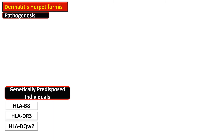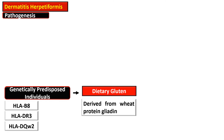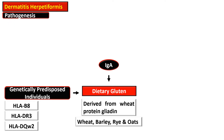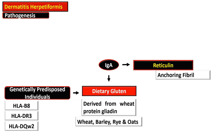Dermatitis herpetiformis is a disease that occurs in genetically predisposed individuals who have HLA-B8, HLA-DR3, and HLA-DQW2 haplotypes. There is antibody development against dietary gluten, and these dietary glutens are derived from wheat, gliadin, barley, rye, and oats.